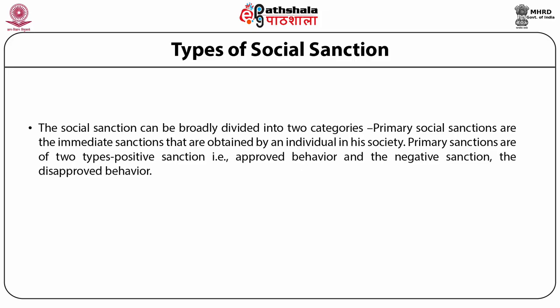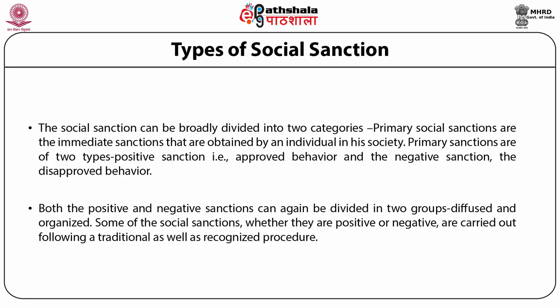Types of Social Sanction: Social sanctions can be broadly divided into two categories — primary and secondary. Primary social sanctions are the immediate sanctions obtained by an individual in the society. Primary sanctions are of two types: positive sanctions, that is approved behavior, and negative sanctions, that is disapproved behavior. Both positive and negative sanctions can again be divided into two groups — diffused and organized. Some social sanctions, whether positive or negative, are carried out following a traditional and organized procedure; these come under the organized group. Sometimes society expresses approval or disapproval of behavior quite spontaneously — this makes up the diffused group.